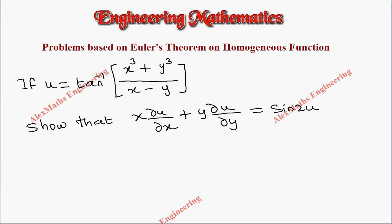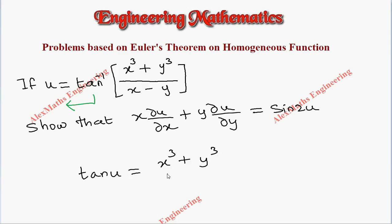Hi students, this is Alex. In this video we are going to discuss a problem based on Euler's theorem on homogeneous functions, where the function u is tan inverse of (x cube plus y cube) by (x minus y). Let's take this tan inverse to the other side, so it will become tan u. So now we have tan u equal to x cube plus y cube divided by x minus y.